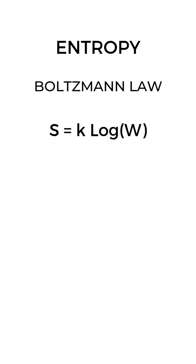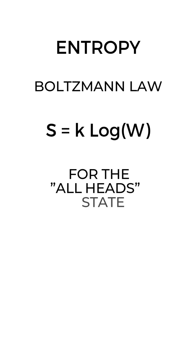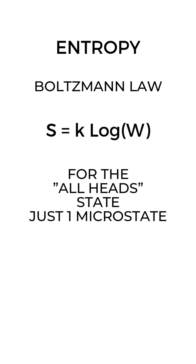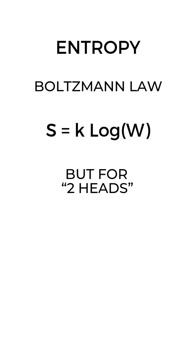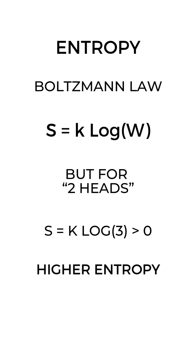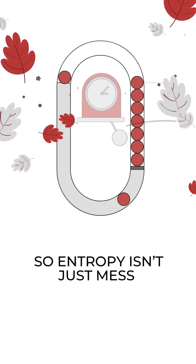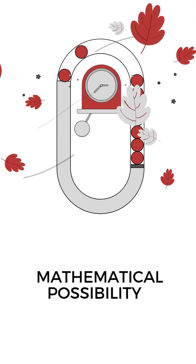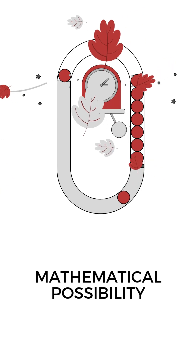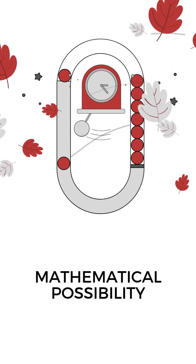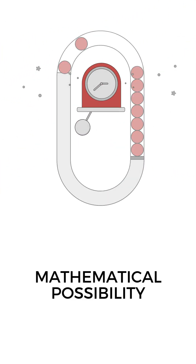Now apply Boltzmann's law. For the all-heads state, just one microstate: S equals K log 1 equals 0 — minimum entropy. But for two heads, S equals K log 3 — higher entropy. So entropy isn't just mess. It's mathematical possibility. Nature doesn't prefer disorder; it just plays the odds.